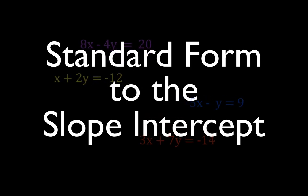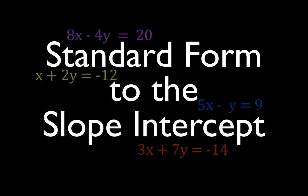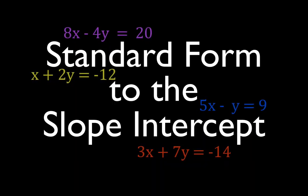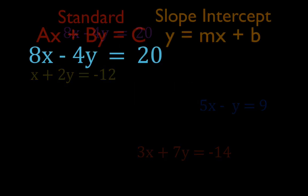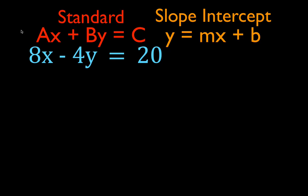In today's video we are going to convert the following four linear equations from the standard form to the slope-intercept form. This is the first one we are going to work on: 8x minus 4y equals 20.